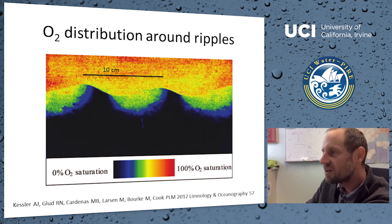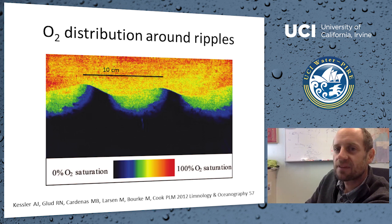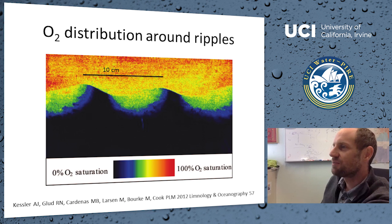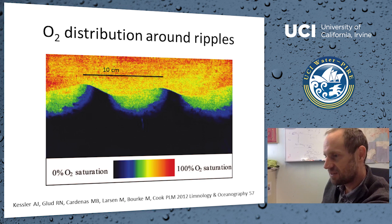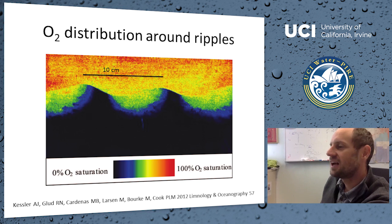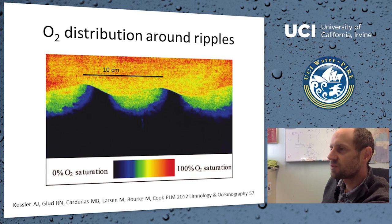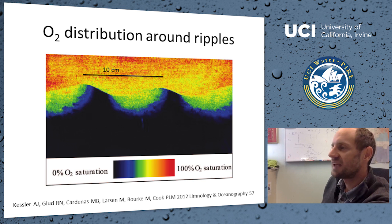Using a planar optode — a technique largely developed by Ronnie Glud — you can see 100% oxygen saturation in the water column, and then very distinct zones of oxygenation within the ripples where water is pumped in, contrasted with the anoxic black zones where the water is moving out of the ripple.